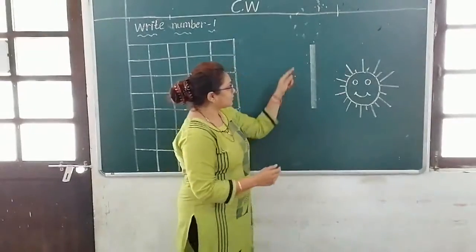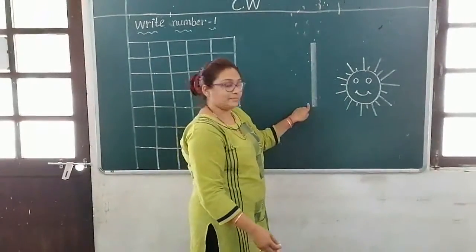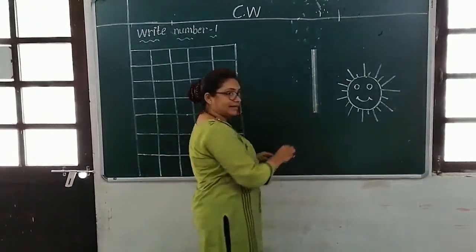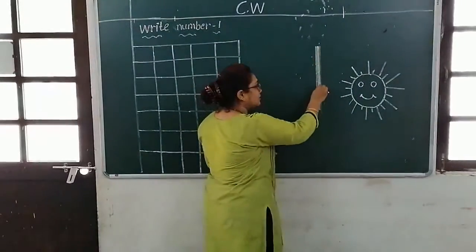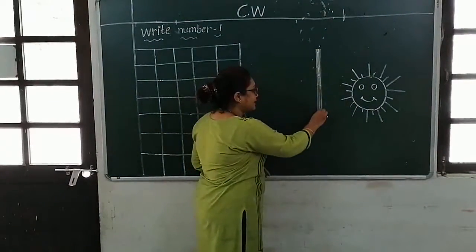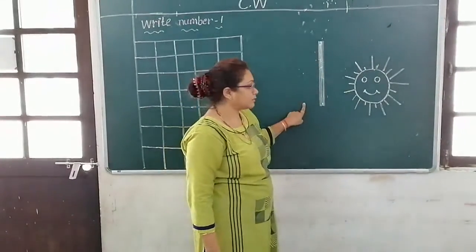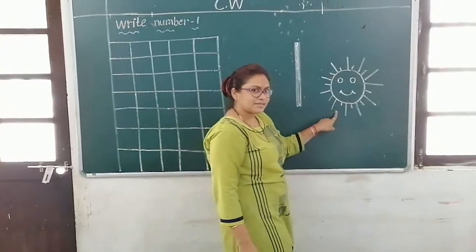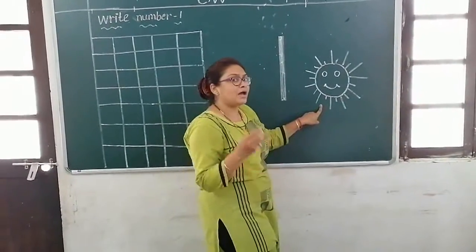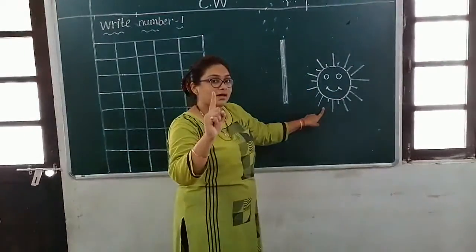Now look at the board. Which number is this? Number one. One bus — how many buses? One bus. Which number is this? Sun — sun coming up in the morning. But how many suns? One sun. Only one sun.